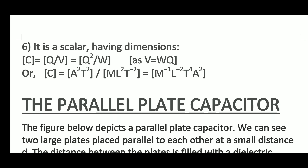As we know that V is equal to W by Q, so Q by V becomes Q squared upon W. Now putting the values: Q is A into T, so its square is A squared T squared, and the dimension formula of W (work done) is M L squared T to the power minus 2. Combining them, we get M to the power minus one, L to the power minus two, T to the power four, and A squared.